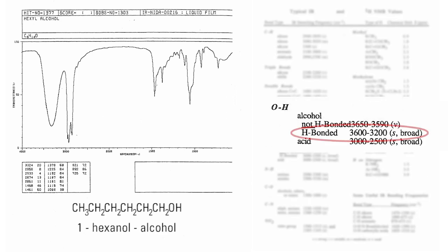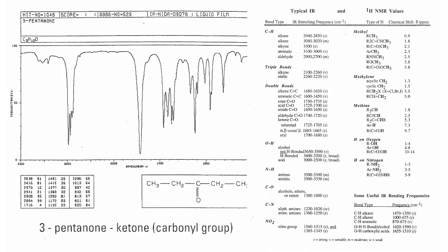For instance, alcohols can be quickly revealed by their OH stretch that appears between 3,600 and 3,200 centimeters to the negative 1. These peaks are highly characteristic because they are generally broad and strong, like the OH stretch in one hexanol at 3,324 centimeters to the negative 1.